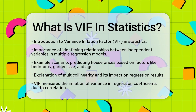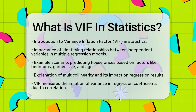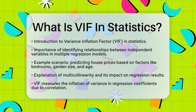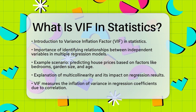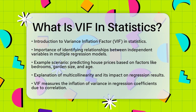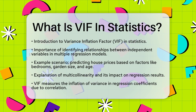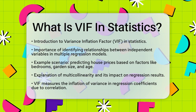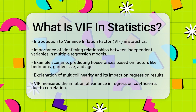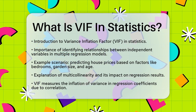Imagine you're trying to predict how much a house will sell for based on several factors like the number of bedrooms, the size of the garden, and the age of the house. In a perfect world, each of these factors would be completely independent of each other, but in reality they might be correlated. For example, houses with more bedrooms often have bigger gardens.